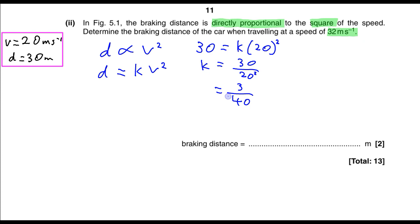We now need to find the distance when the speed is 32 meters per second. So we can rewrite our equation with the known value of k, so we will have D equals 3 over 40 times v squared.